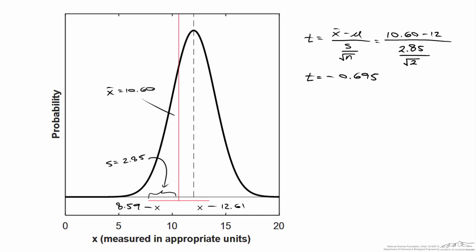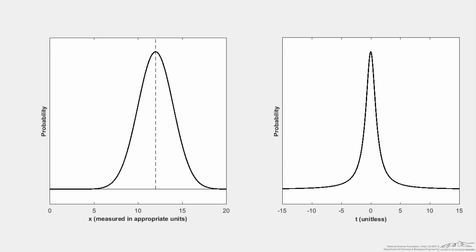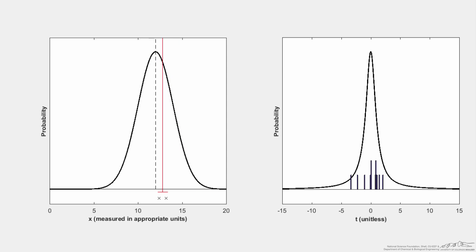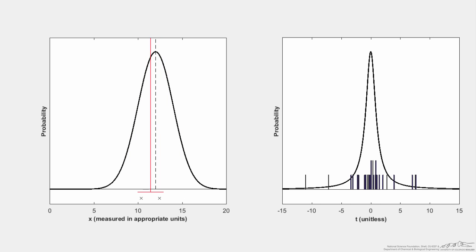From here, I'm going to run multiple simulations, collect multiple values of t, and make a histogram of all those t values. On the left I'm showing the normal distribution, and on the right a t-distribution with one degree of freedom. I run the simulation, get a value of t, run it again and get another — negative this time. As I make multiple runs, I start collecting a histogram, and over a sufficient number of iterations I expect to build up to the t-distribution we would predict.